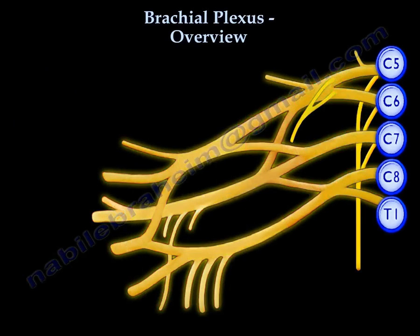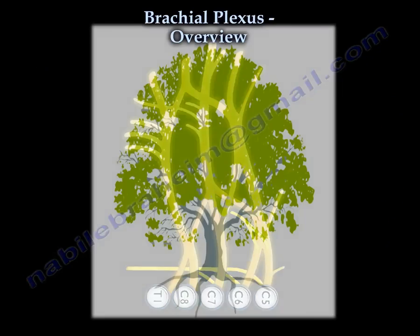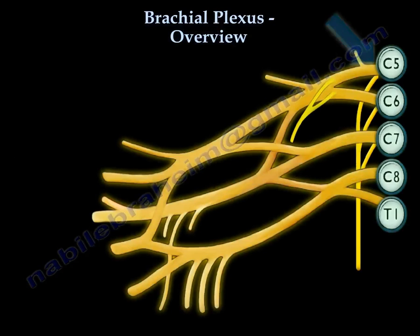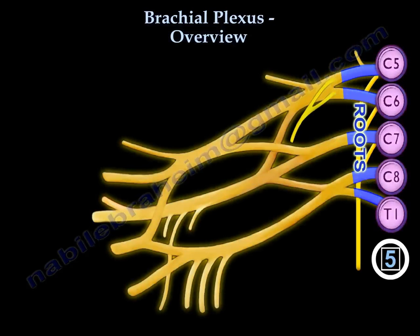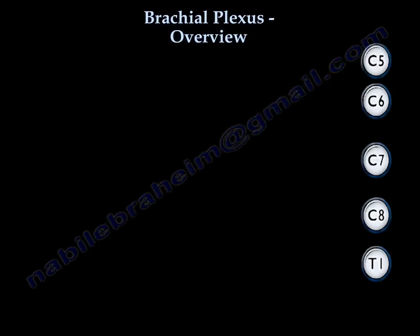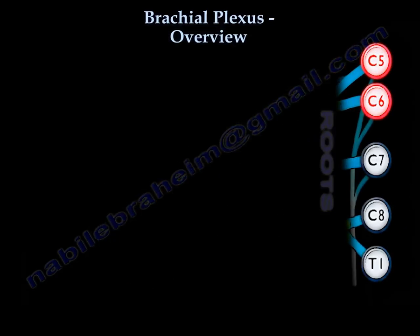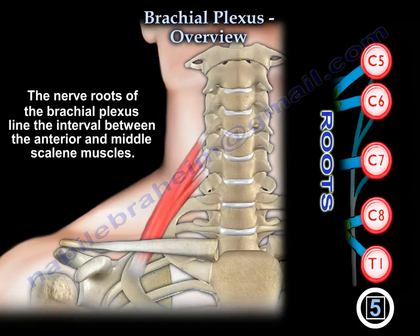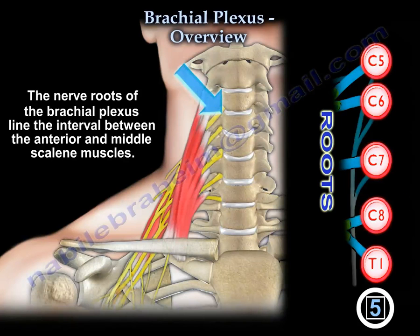The brachial plexus is like a tree that has roots, trunks, and divisions. We start with the basics. You have five roots, starting from C5 to T1 — that is C5, C6, C7, C8, and T1. The roots line the interval between the scalenus anterior and scalenus medius.